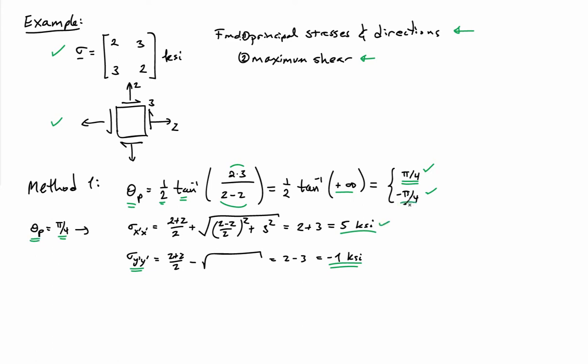If I had picked minus pi over 4 to do it, I would have found the reverse here. I would have found that sigma x prime x prime was minus 1 ksi, and sigma y prime y prime was 5 ksi.